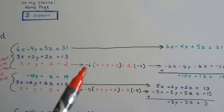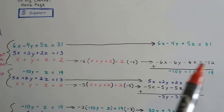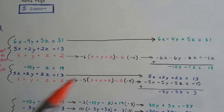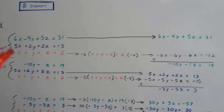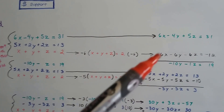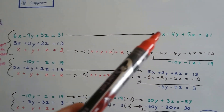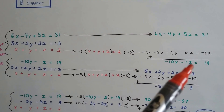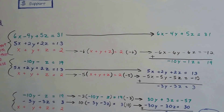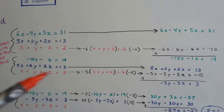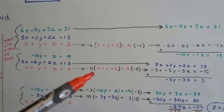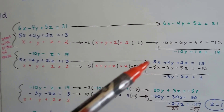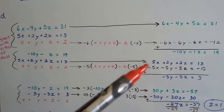I multiplied it by a negative 6, created this equation out of it, and because I multiplied by that negative 6, it created a zero pair — additive inverses — with the positive 6x, so we can eliminate it. That gives us negative 10y minus z equals 19. Then I took that same equation and multiplied it by a negative 5 to get rid of the 5x, creating a zero pair with the positive 5x and the negative 5x.